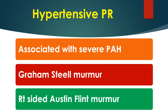The murmur is heard in the pulmonary area and left sternal border, resembling the murmur of AR. It may be heard in Eisenmenger syndrome, severe primary pulmonary arterial hypertension, and severe pulmonary hypertension secondary to left heart diseases like severe mitral stenosis. The murmur starts early in diastole after a loud P2. A mid-diastolic and presystolic murmur known as right-sided Austin Flint murmur may sometimes be associated.